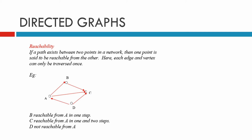Reachability. If we have a path that exists between two points in a network, then one point is said to be reachable from the other — which means we can get to it. Here, each edge and vertex can only be traversed once, so be careful. We can't just keep going around and around to get to another point.